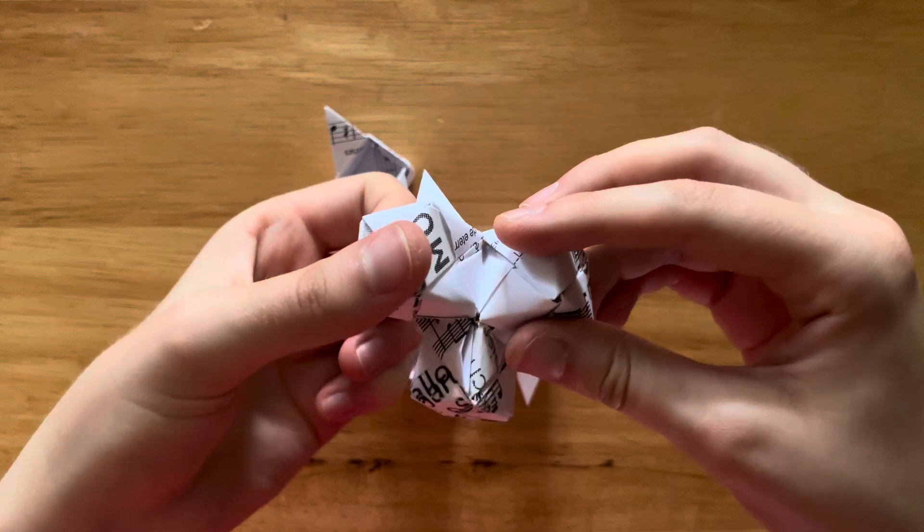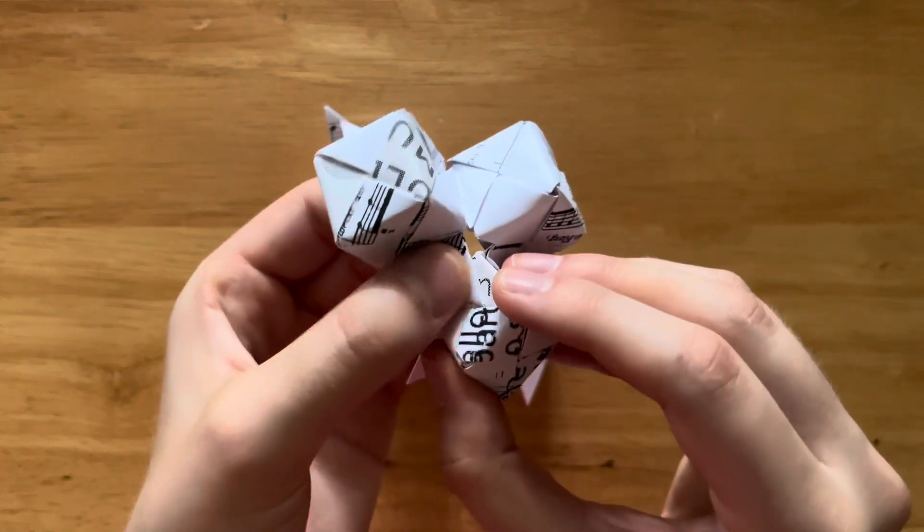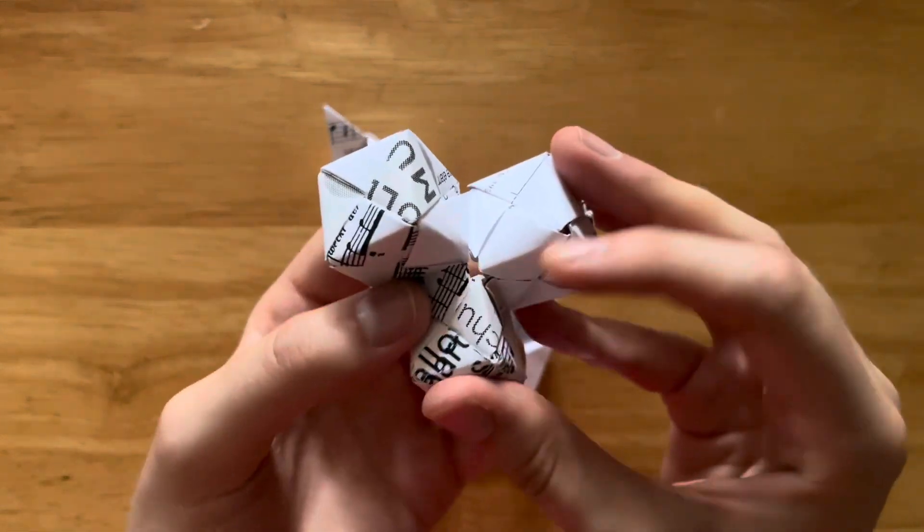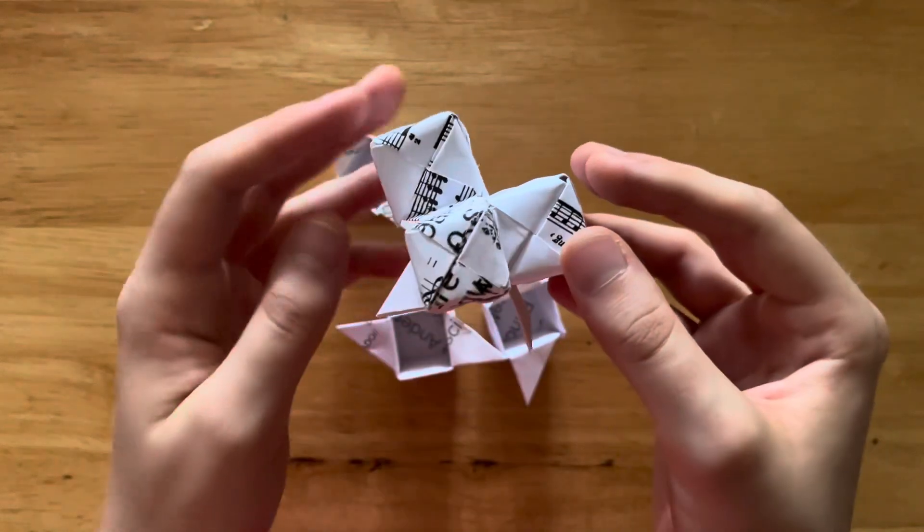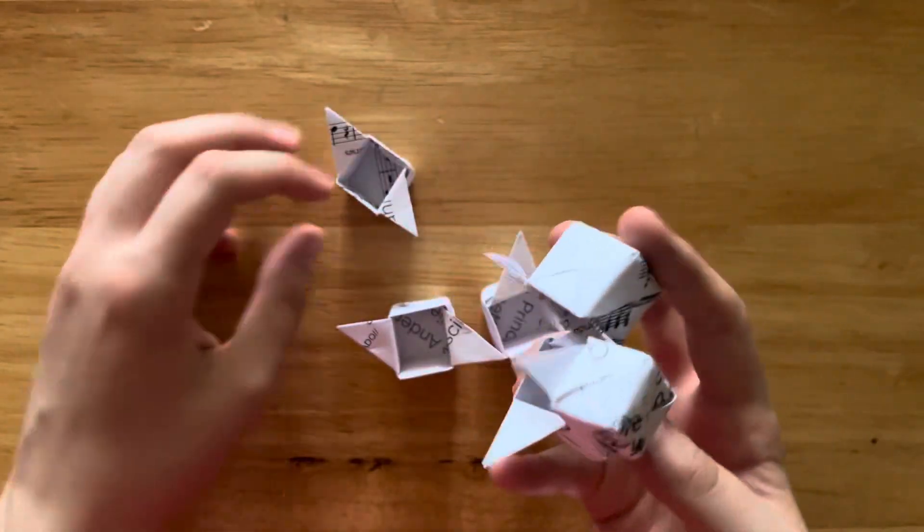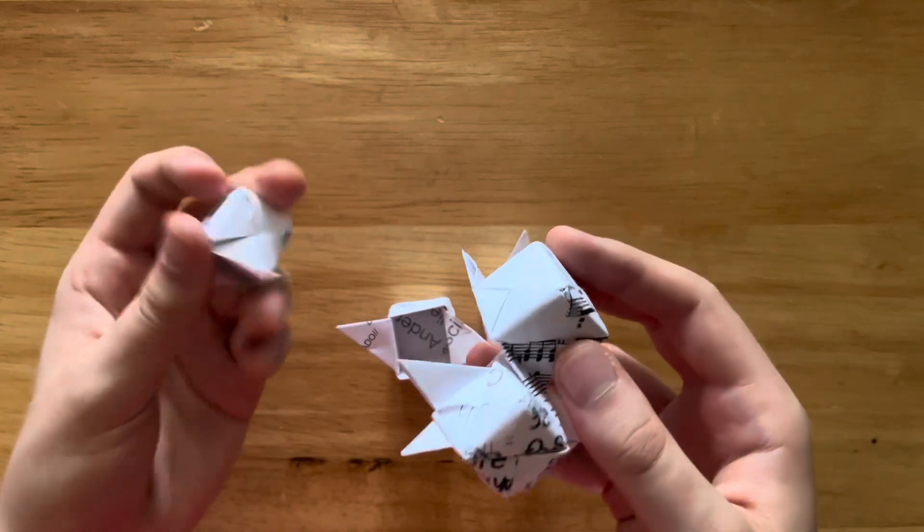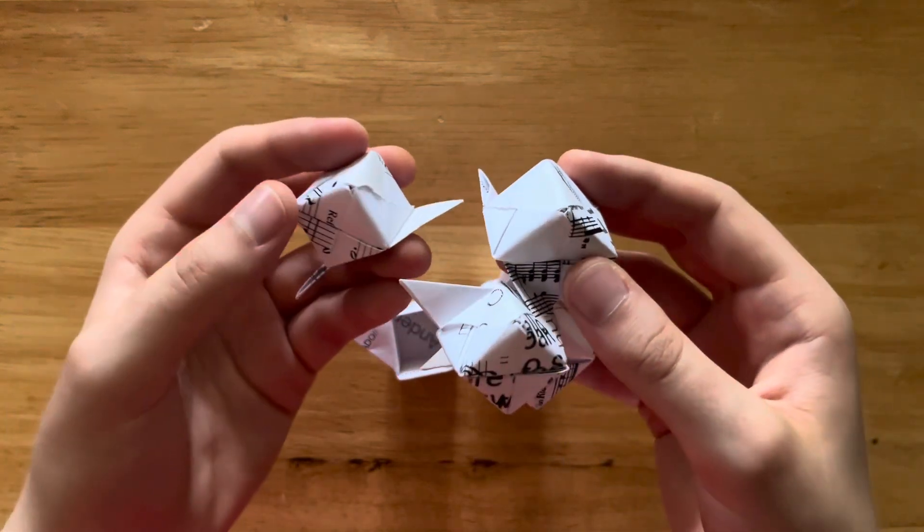Again, flap in pocket. Here we've kind of created a group of three. We'll flap in pocket with that as well. There we go. I'm not sure why that one is smaller than the rest. I thought the papers were all the same size.